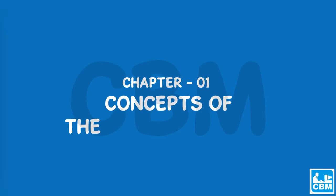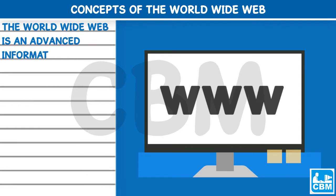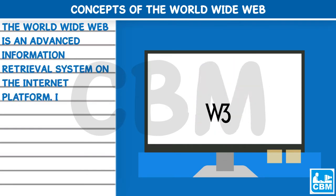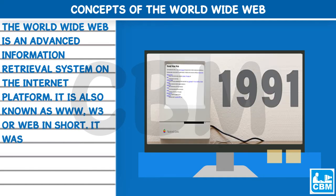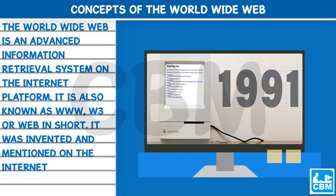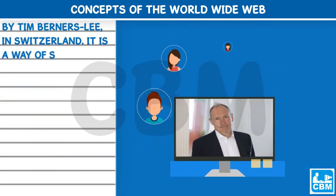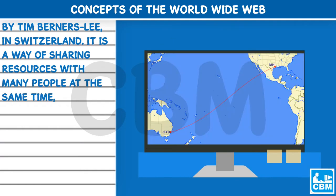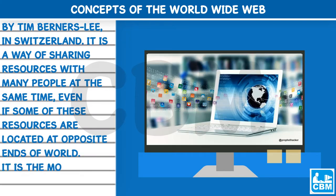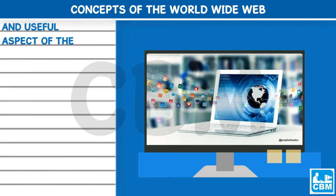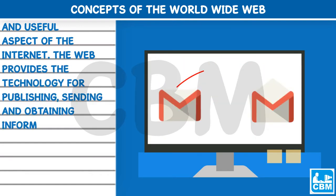Chapter one: Concepts of the World Wide Web. The World Wide Web is an advanced information retrieval system on the internet platform, also known as WWW, W3, or simply 'the web.' It was invented in 1991 by Tim Berners-Lee in Switzerland. It is a way of sharing resources with many people at the same time, even if some of these resources are located at opposite ends of the world. It is the most exciting and useful aspect of the internet.